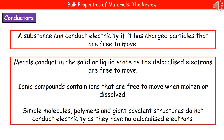The second property we're going to consider is their ability to conduct electricity. A substance can conduct electricity if it has charged particles that are free to move. Metals are able to conduct either in the solid or liquid state, because they have delocalized electrons within their structure which are free to move. Ionic compounds contain charged ions — when those ionic compounds are either molten or dissolved, they will conduct electricity because the ions are free to move. However, in the solid state, the ions are held in fixed positions, so they cannot conduct electricity.